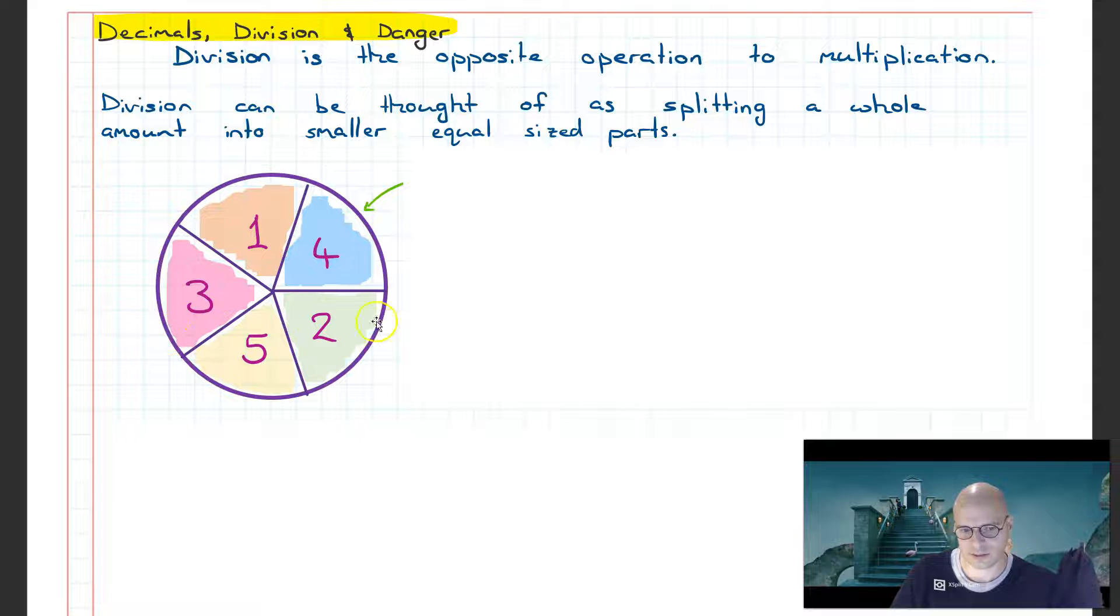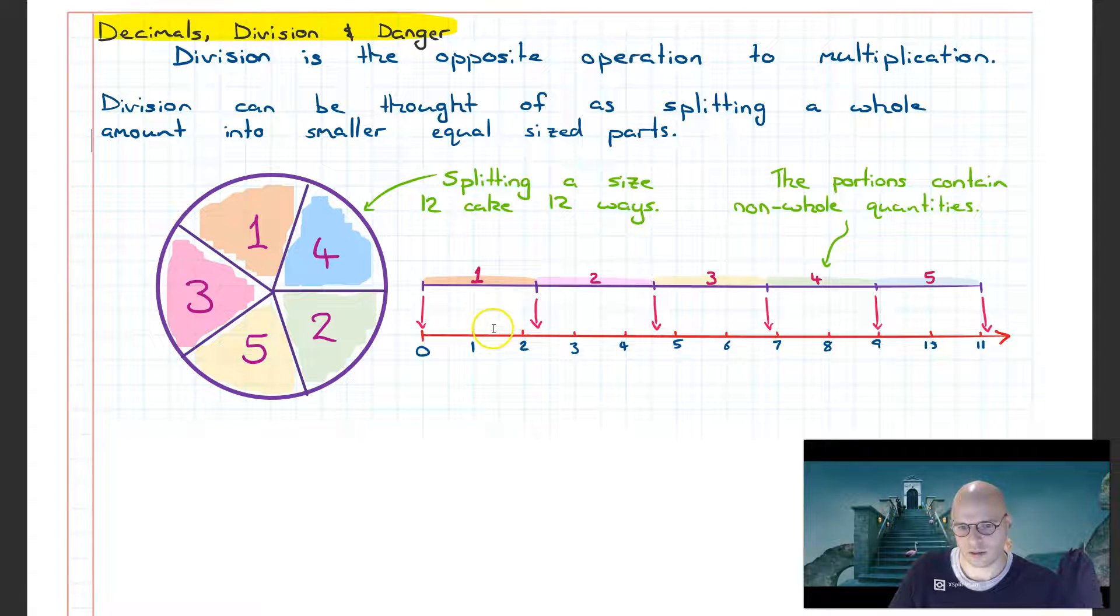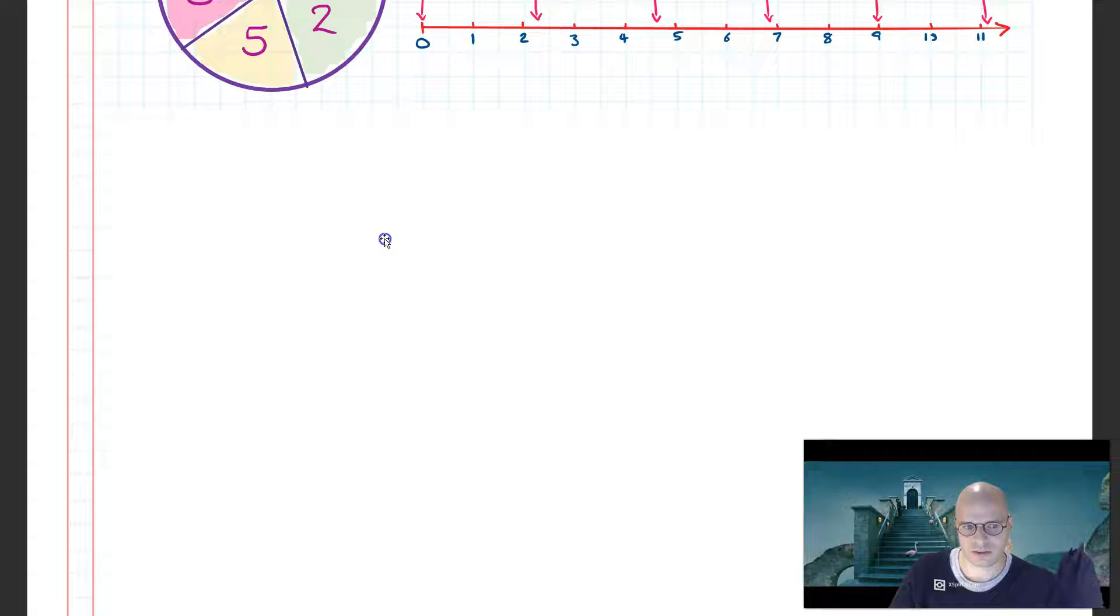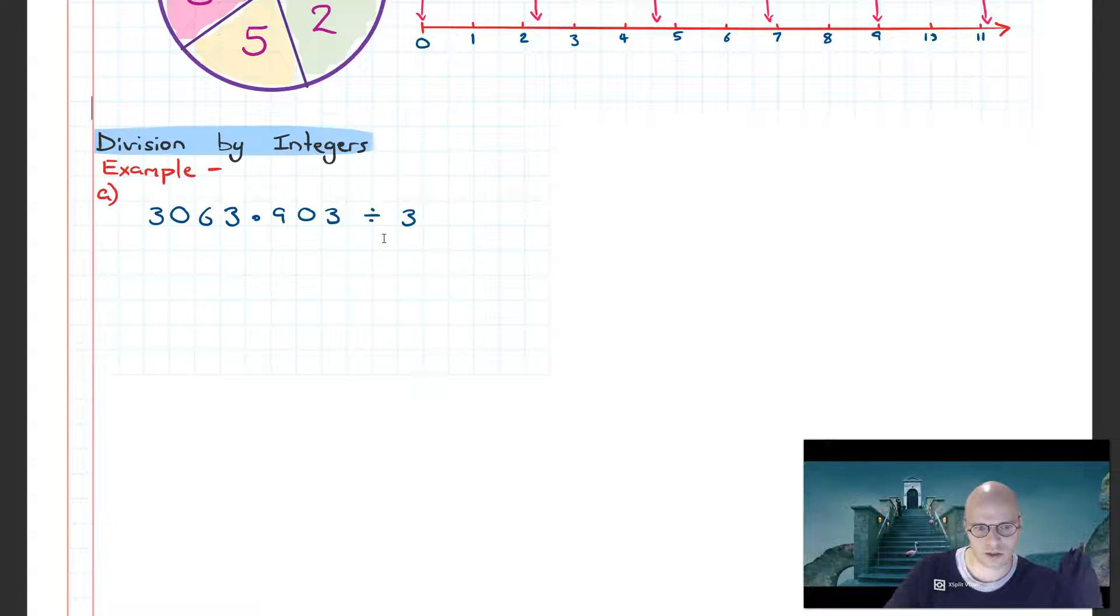However, if you think about it with a number line, imagine we have a size 11 number line and we want to split it into five equal portions. You'll notice that each portion doesn't equal the size of a whole number; rather it's somewhere between two and three, so we get a decimal result. We're going to look at how to divide a decimal number by an integer, splitting a decimal number into three equal portions in this case.